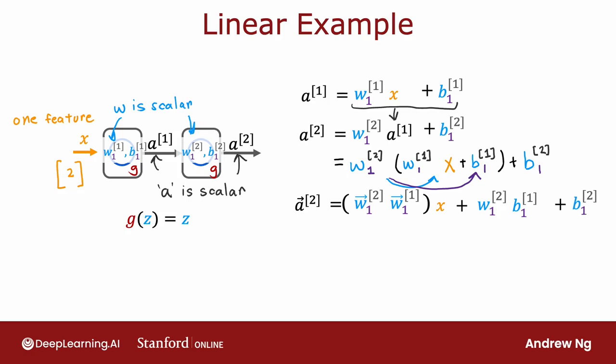And it turns out that if I were to set w equals w2 times w1 and set b equals this quantity over here, then what we've just shown is that a2 is equal to w x plus b. So a2 is just a linear function of the input x.